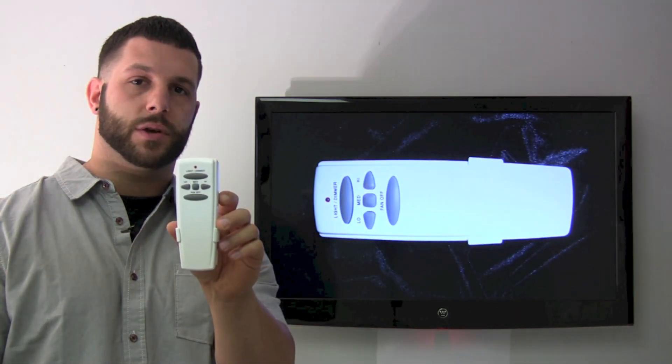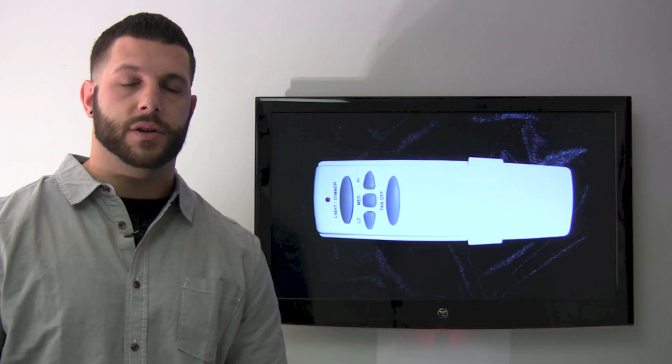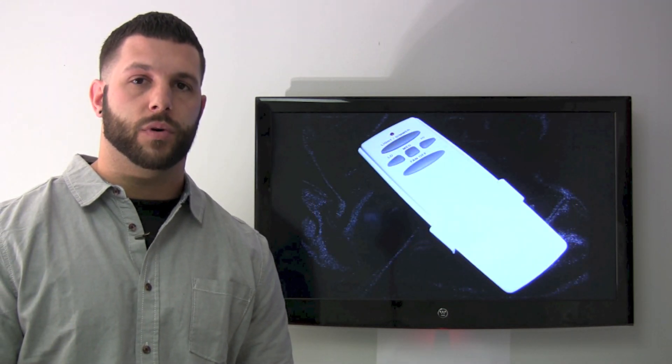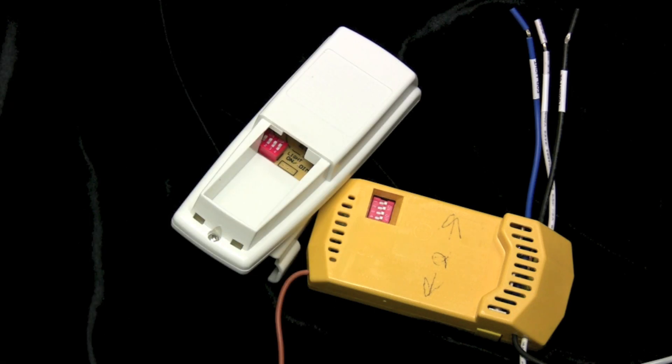You want to ensure that the dip switches located in the battery cover match the ones on the receiver inside the fan. That is how the remote control will match and work. Here I have set up for you the receiver that is inside of the fan and the remote control.